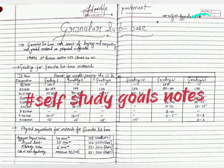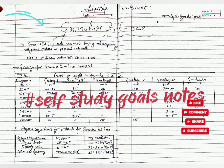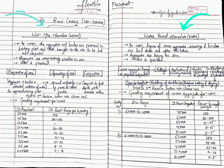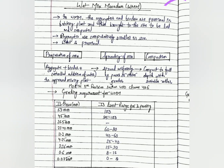Please subscribe to the channel to get notifications about upcoming lectures. Now in this lecture we will focus on the differences between Wet Mix Macadam and Water Bond Macadam. First, what is Wet Mix Macadam? The aggregate and binder are pre-mixed in a batching plant, brought to the site, laid, and compacted.